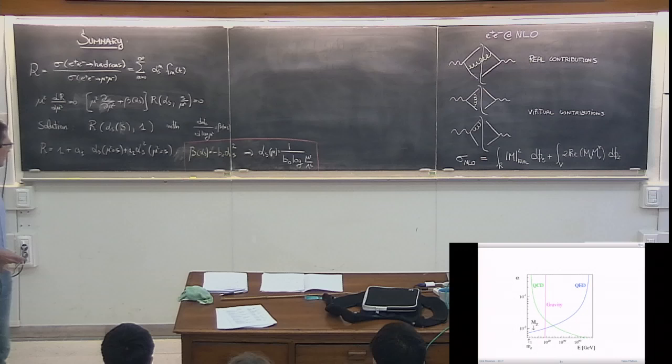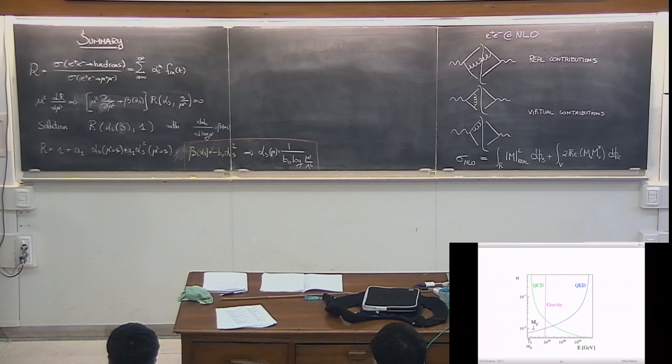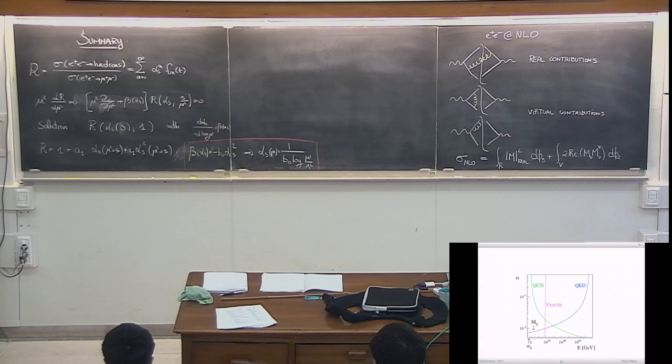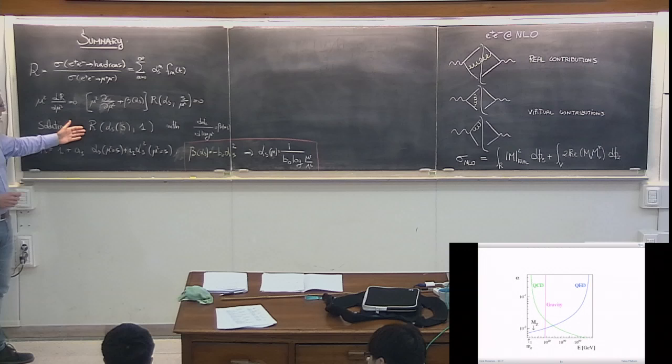Good morning. We start again from where we left yesterday. When we calculate an observable R and express it in terms of a power series in α_s — our small expansion parameter — by imposing that the observable is independent of the choice of this arbitrary scale μ, we found the solution of the renormalization group equation.